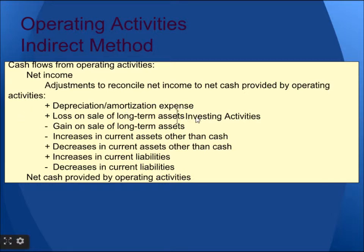Then add the loss on the sale of a long-term asset — this is from investing activities. Deduct the gain on the sale of a long-term asset. Deduct the increase in a current asset other than cash. Add the decrease in a current asset other than cash. Add the increase in current liability.